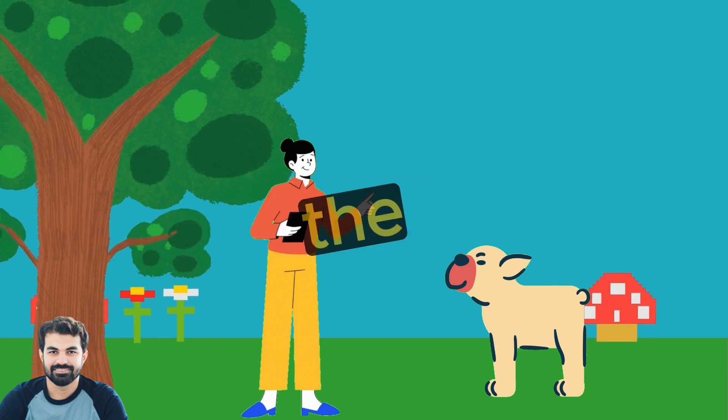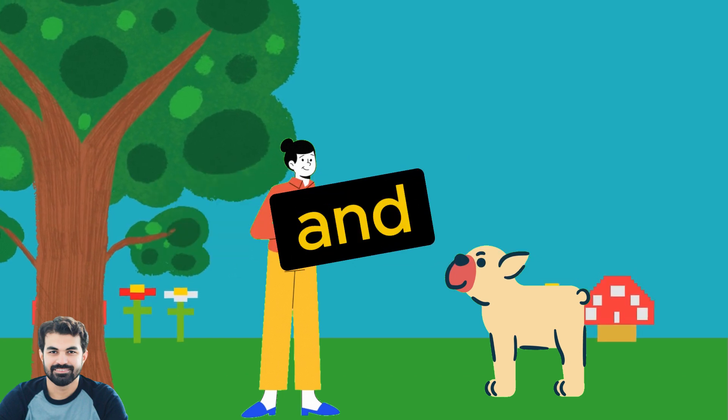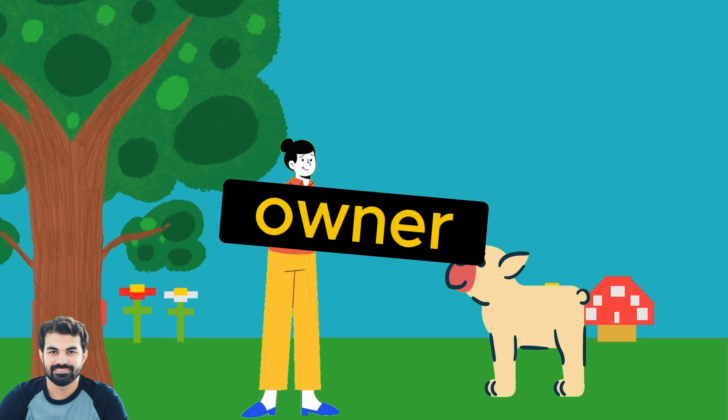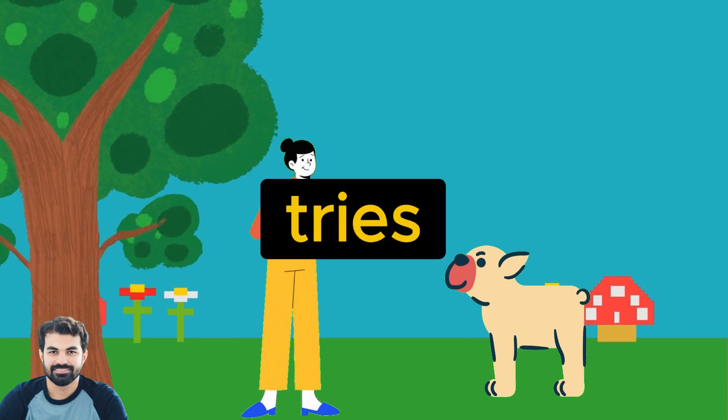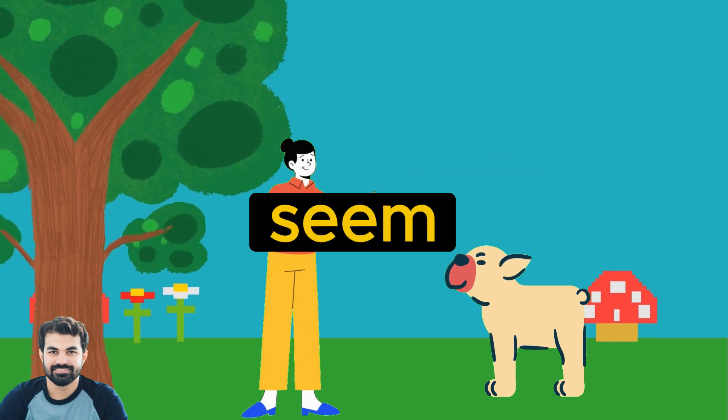Each time, the dog takes action, receives feedback, and gets a new command from his owner. With each cycle, he tries to choose the best action to keep his owner happy. While this interaction might seem straightforward, it's actually quite complex.